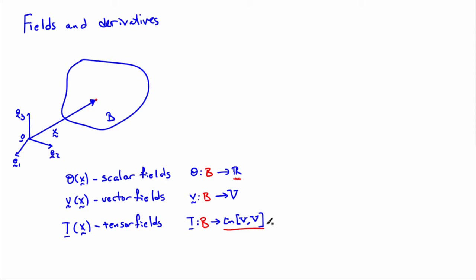And so to each point in the body, we can attach a tensor, say the stress tensor, and we'd have the stress field. And these are the three types of fields that we're going to encounter in continuum mechanics: scalar fields, vector fields, and tensor fields.